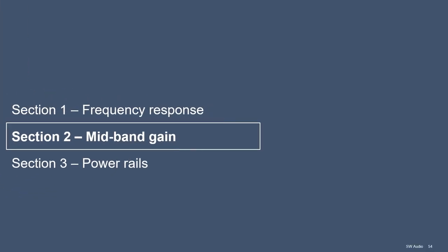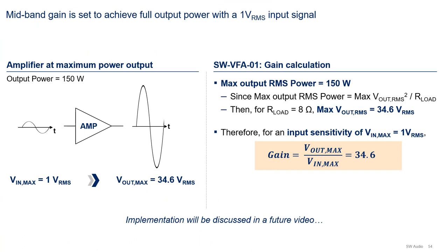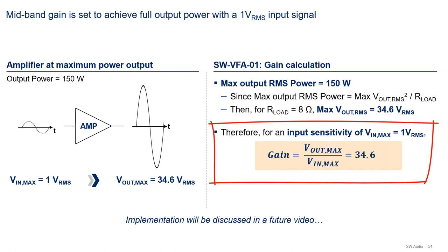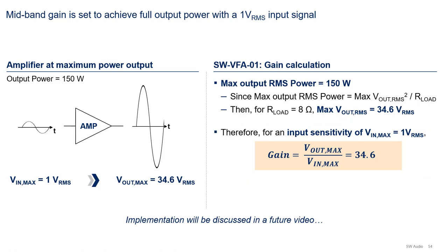Let's now discuss the mid-band gain value. The mid-band gain should be set to enable full output swing when the amplifier is driven at its rated input sensitivity — in this case, 1 volt RMS. Our specification for max output RMS power is 150 watts. Since RMS power equals output voltage RMS squared divided by load resistance, for a load resistance of 8 ohms, the maximum output voltage is 34.6 volts RMS. Therefore, for an input sensitivity of 1 volt RMS, the gain needs to be 34.6.